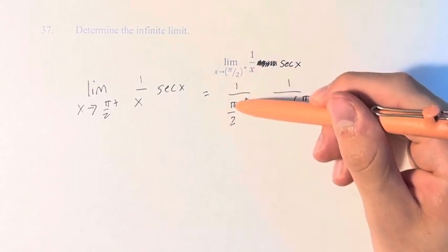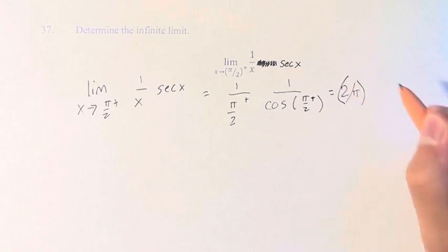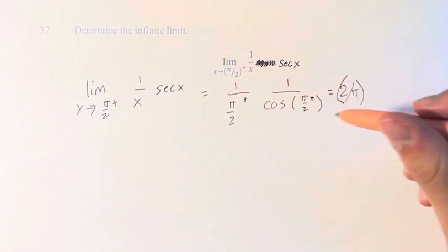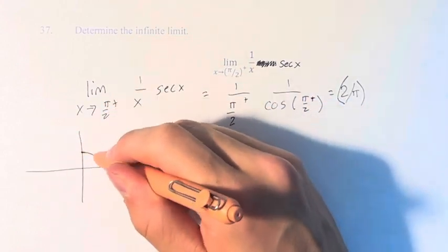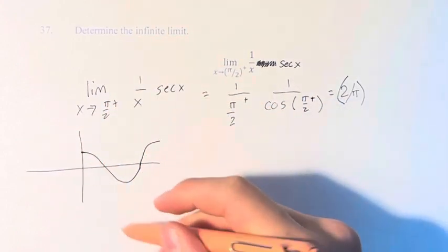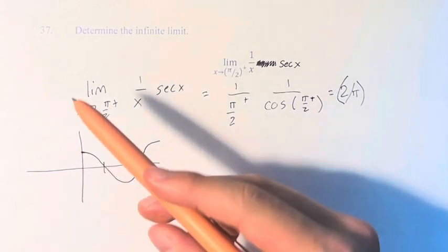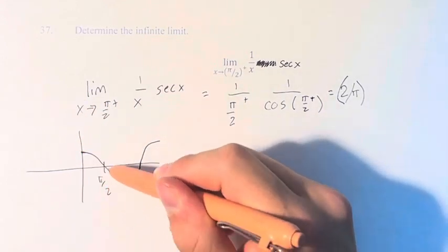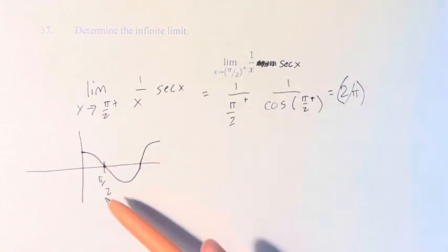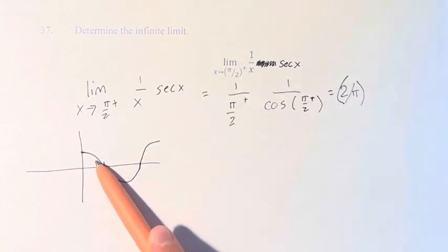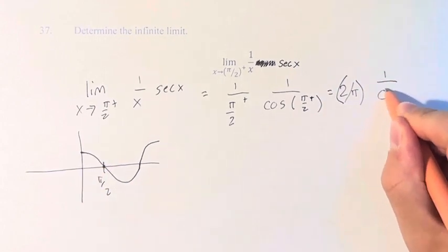Pi divided by 2 — 1 over that, you flip the fraction: 2 divided by pi. And this is being multiplied by 1 over cosine, as you get closer and closer to pi over 2. So this is the graph of cosine. We see that the value of the function at pi over 2 is 0, and as we're approaching it from the right, that means we are approaching 0 from the negative numbers, from the left. So this is 1 over 0 from the left.